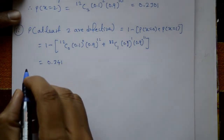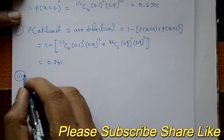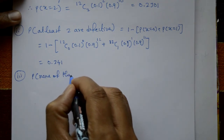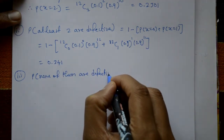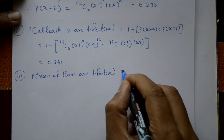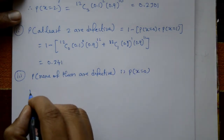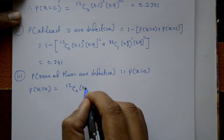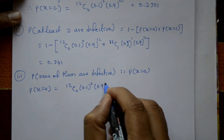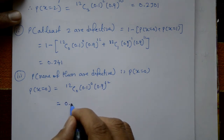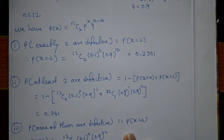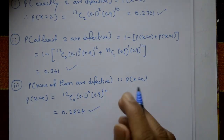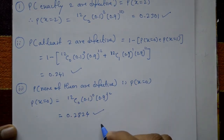For the third case, none of them are defective means x equals 0. Using the binomial distribution formula: P(X = 0) = 12C0 × (0.1)^0 × (0.9)^12, which equals 0.2824. All three results — first case, second case, and third case — lie between 0 and 1, as expected. This is the required solution.